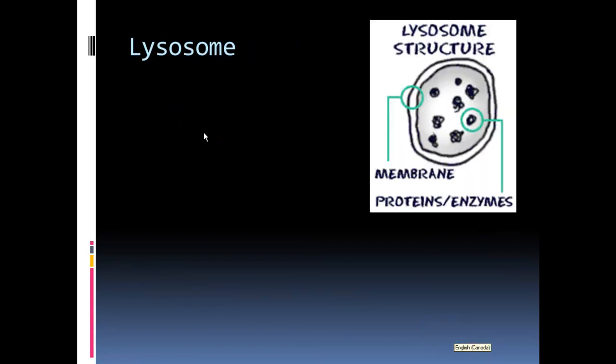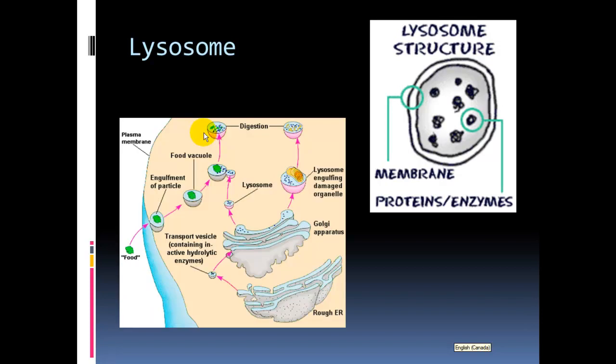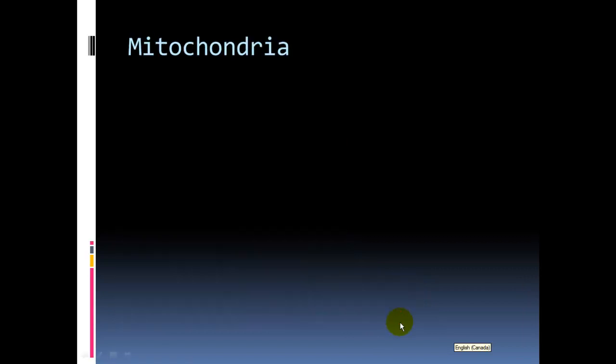Lysosomes are made by the Golgi body or Golgi apparatus. They contain enzymes and break things down. The enzymes within lysosomes can break down food that is engulfed by a unicellular organism, or break down old or damaged organelles when they no longer have function. They can also destroy an entire cell and commit suicide, so they're sometimes called suicide sacs.